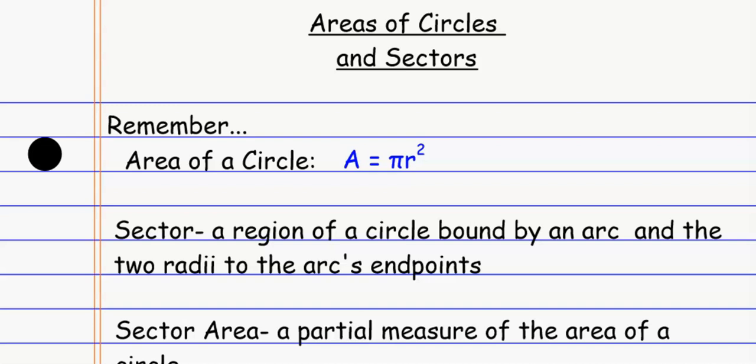Hi there, folks. Today we're looking at areas of circles and sectors. First of all, let's talk about the area of a circle. The area of a circle is A = πr². That's our formula for the area of the entire circle.